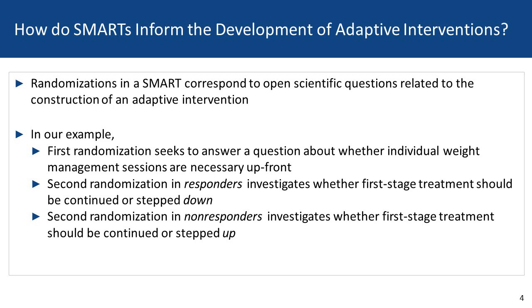In our example, the first randomization is asking whether individual weight management sessions are necessary up front — that is, group weight management, group exercise, and individual weight management versus group weight management and group exercise alone. Among responders, the second randomization asks whether the first-stage treatment should be continued or stepped down — can we reduce the frequency or remove a component? For non-responders, we have a similar question about continuing or stepping up the intervention, randomizing between continuation strategies or a higher frequency or adding a component.